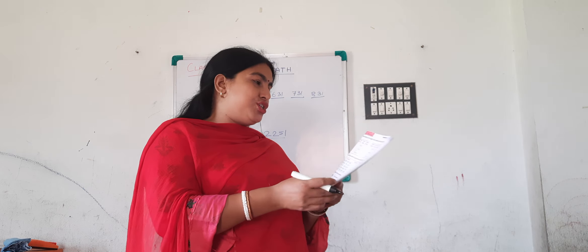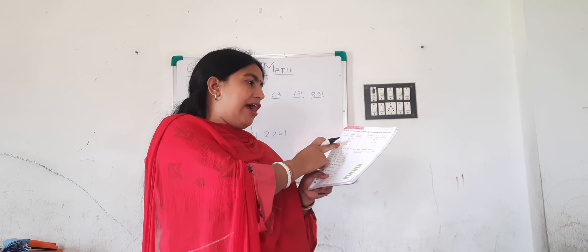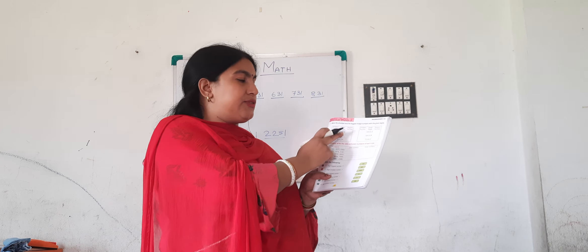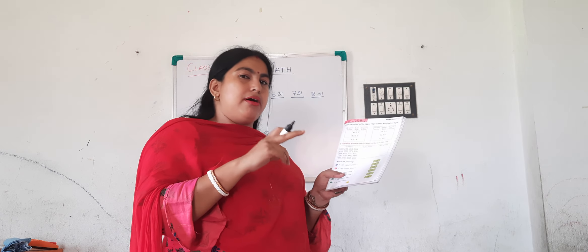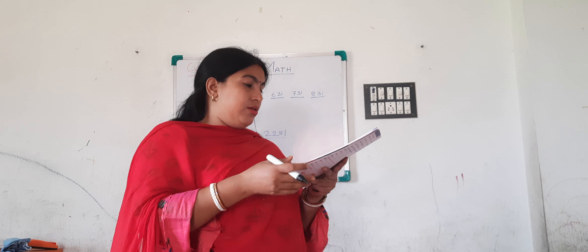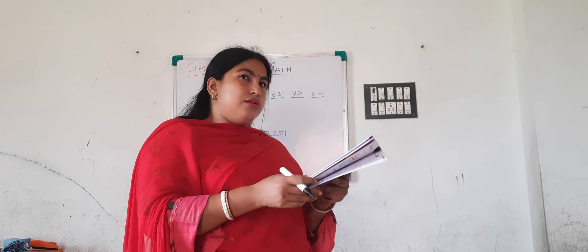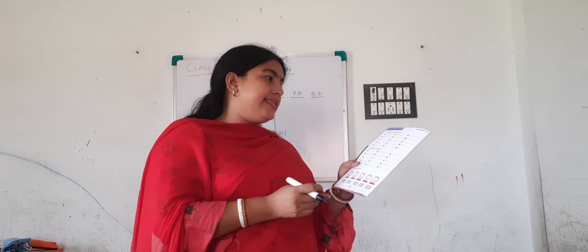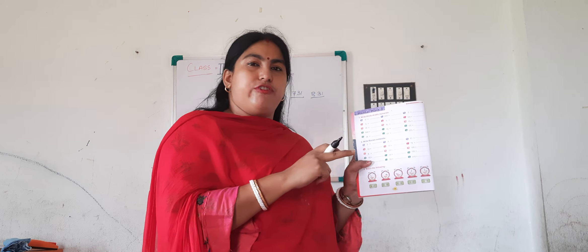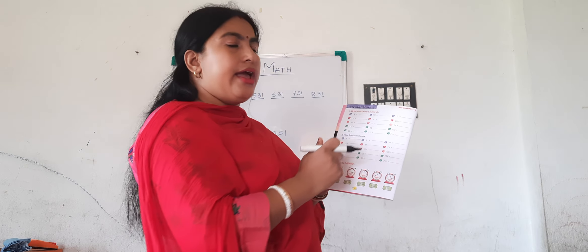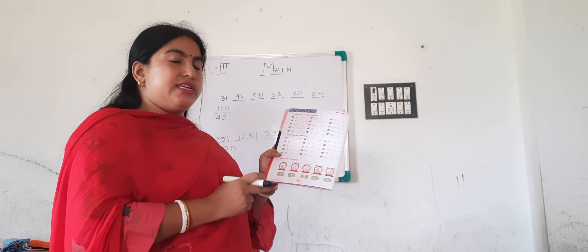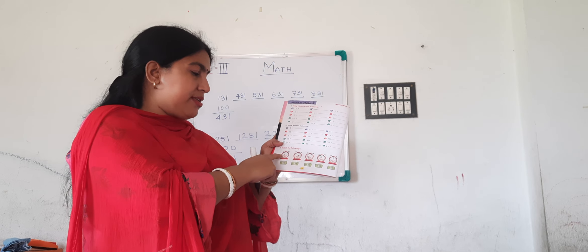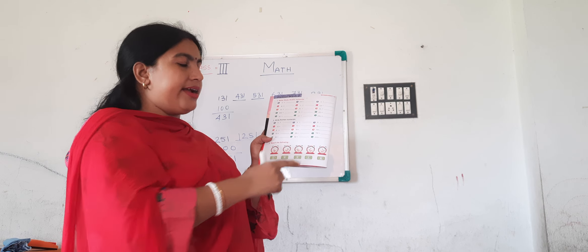Come to the next worksheet — smallest and the biggest number. You have to create the smallest number and the biggest number with the given digits. With these 4 digits, you have to create the smallest and the biggest number. Next, page number 18: write the Hindu-Arabic number. We have done it in the first term also. You have to write the Hindu-Arabic number and the Roman numbers for the given numerals. And match the time shown on the clock with the correct option.